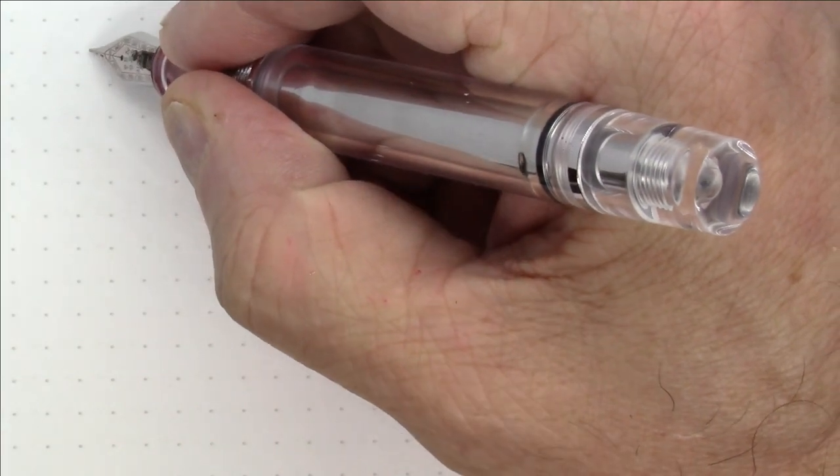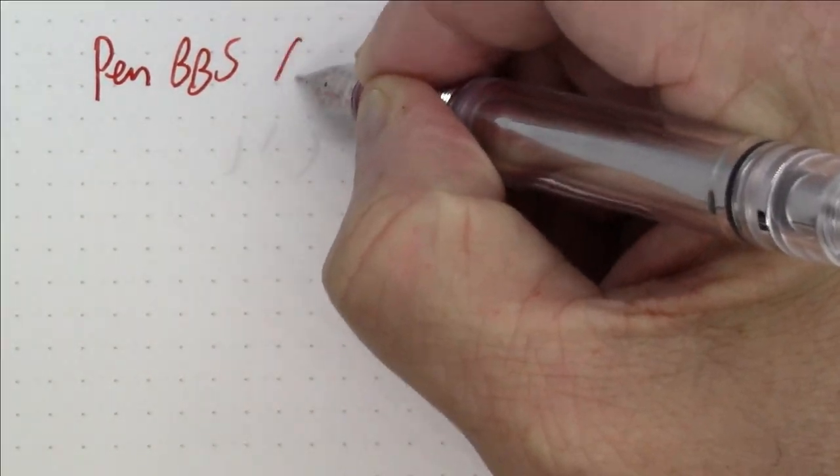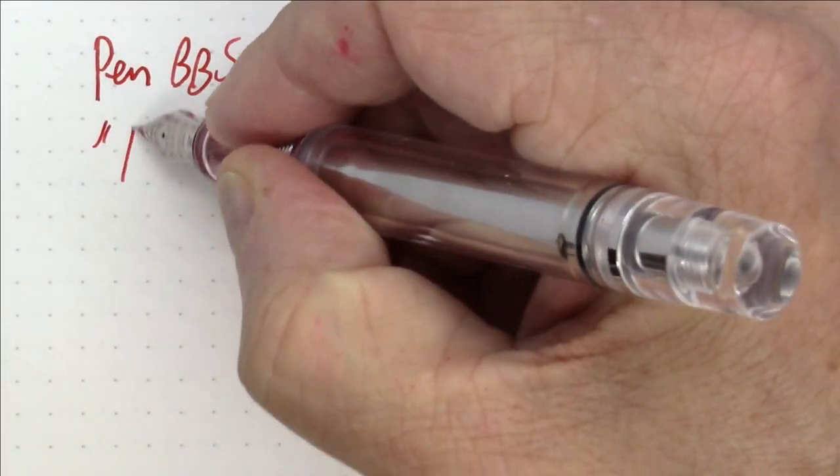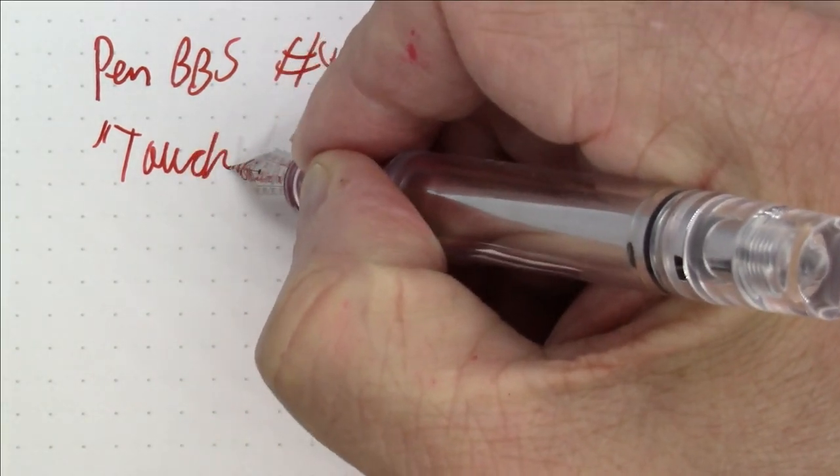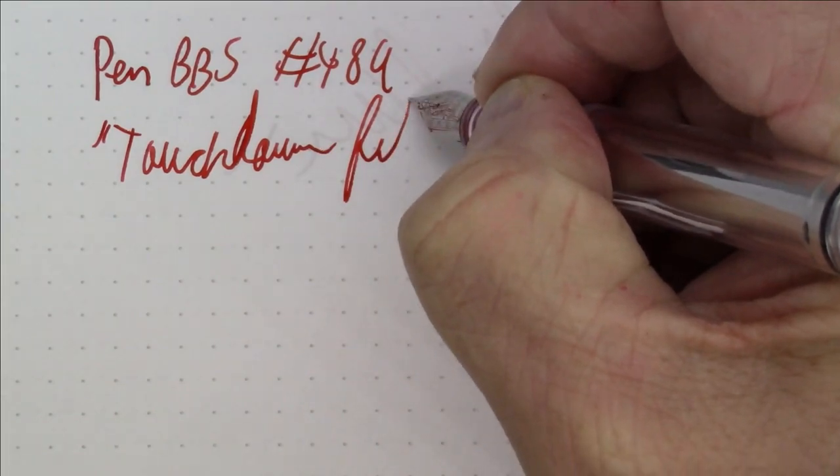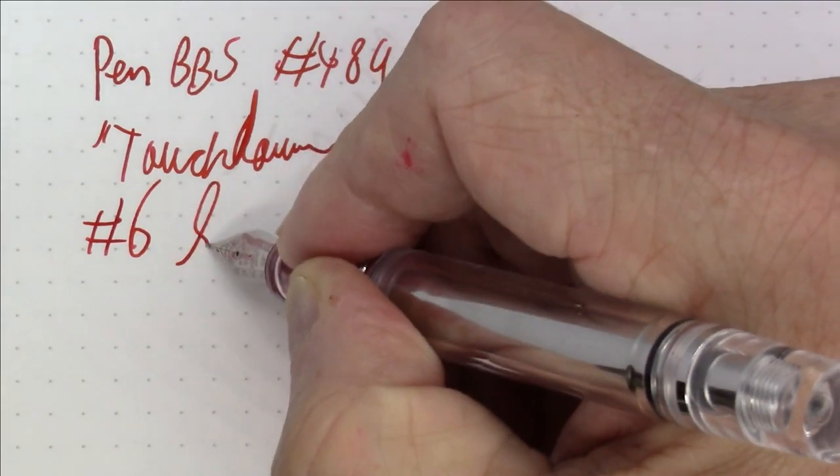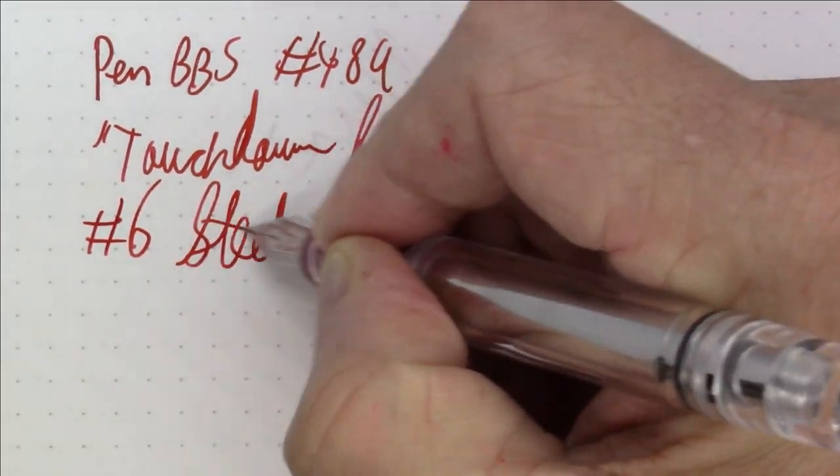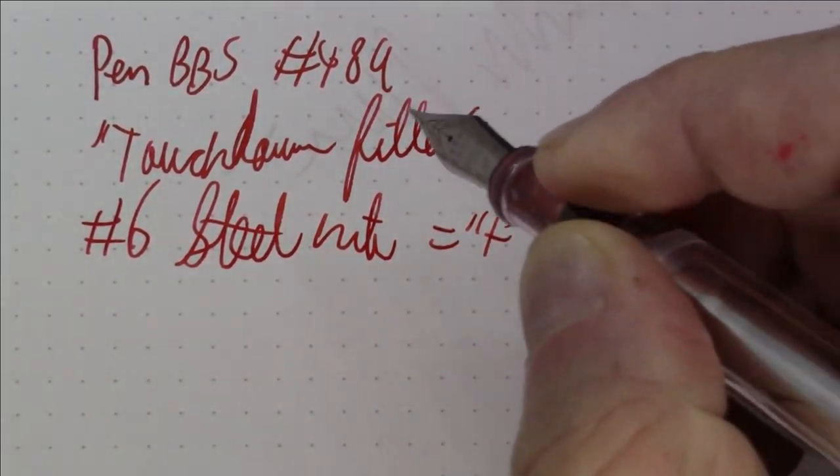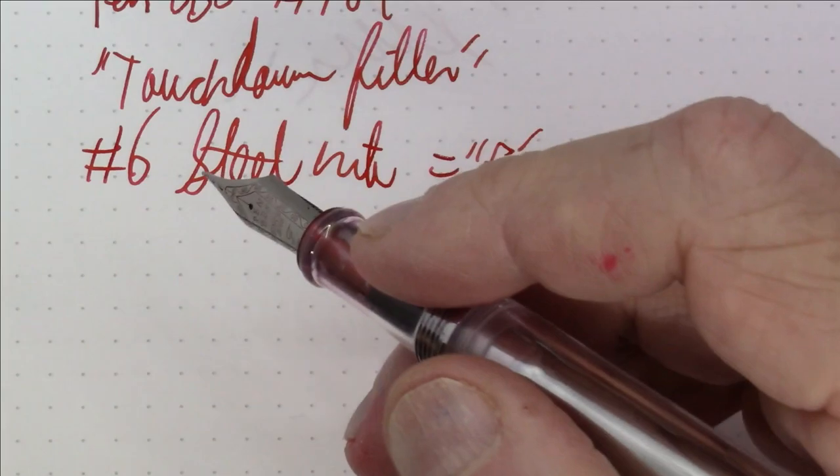Okay folks, what we're writing with here today is a Pen BBS number 489 and this is a touchdown and this has a number 6 steel nib in fine.